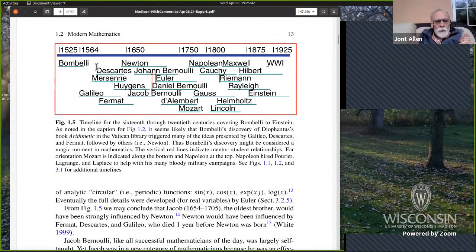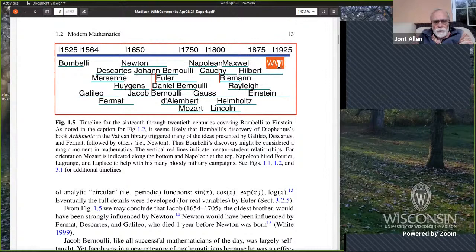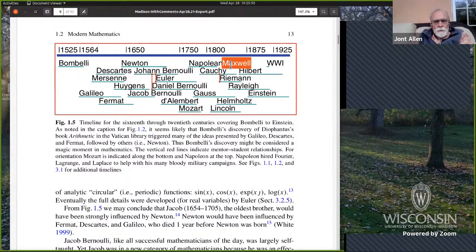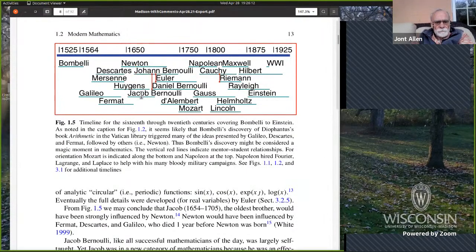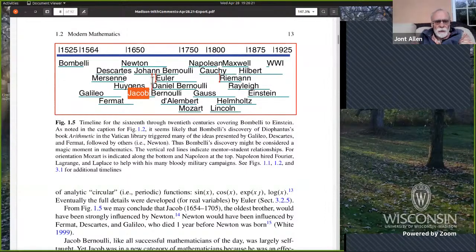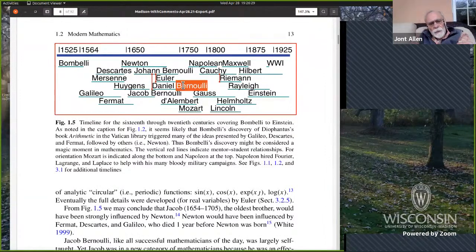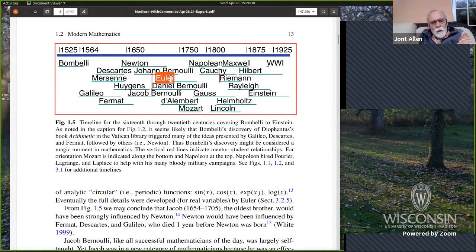Now moving on a little bit more with the history, we go from Bombelli. This is going out to World War II. I've got Lincoln and Mozart here and Napoleon. But the rest of the people, I believe, are all mathematicians or famous scientists, such as Maxwell, Hilbert, Cauchy, Johann Bernoulli. This vertical red line means these people are connected.